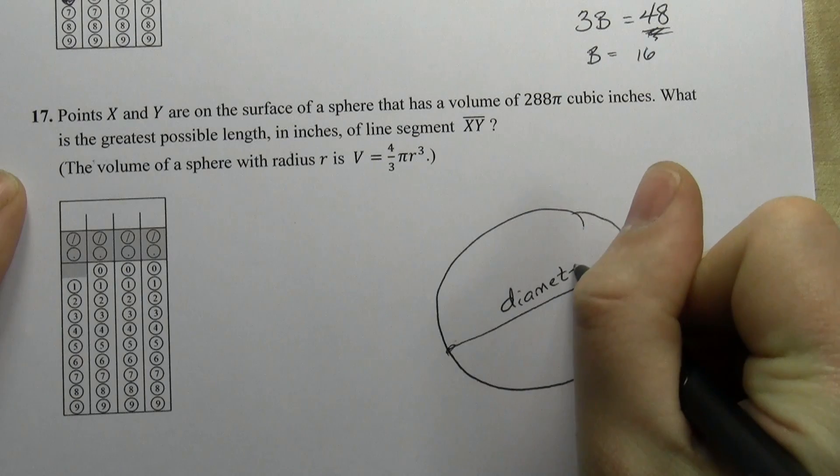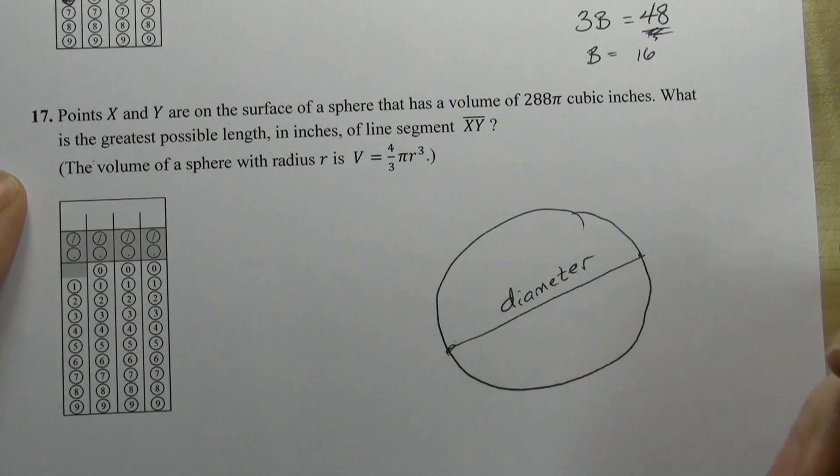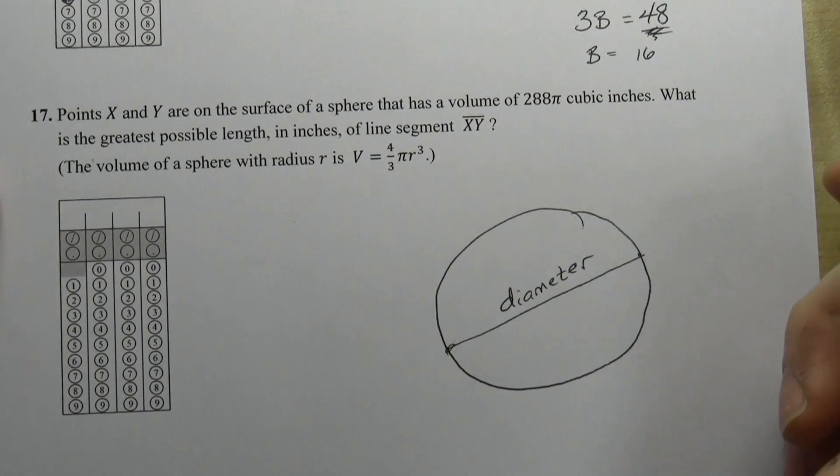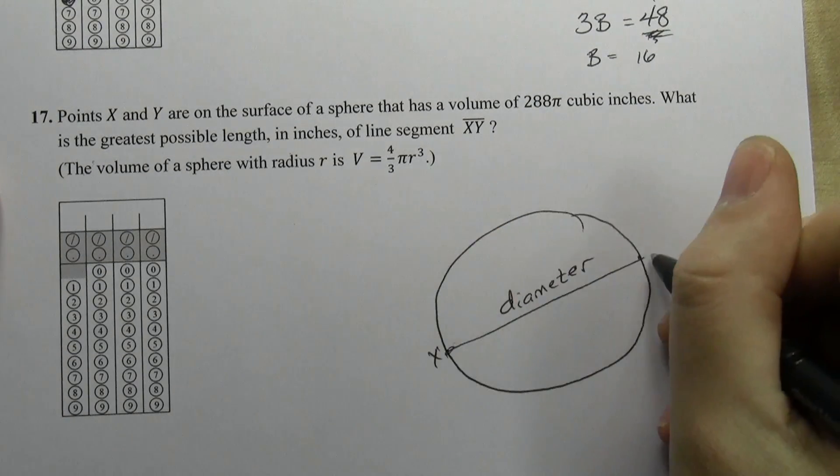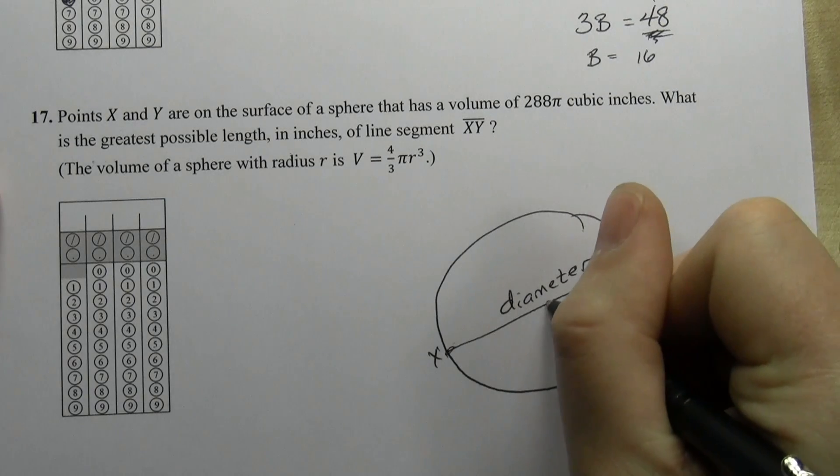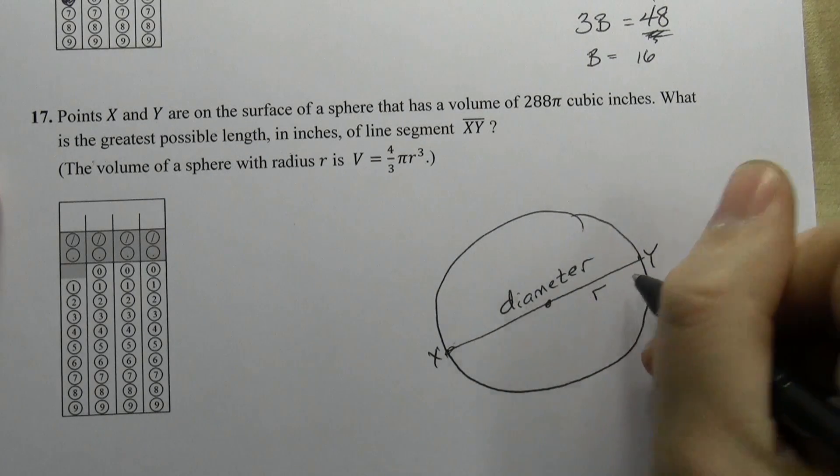So I know that XY has to be a diameter, which is really useful. And again, it's something that doesn't become apparent until you draw a picture. Now that I know that XY is a diameter, I know that I can find the radius to find the length of XY.